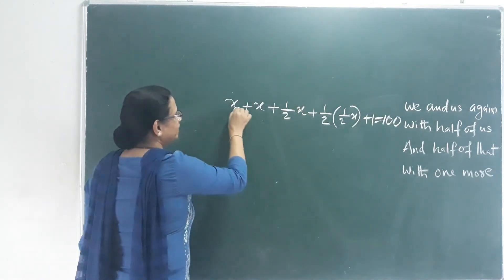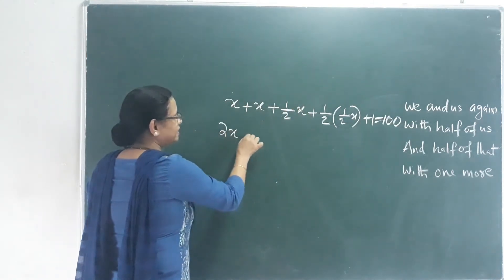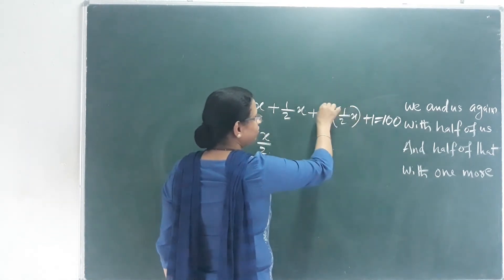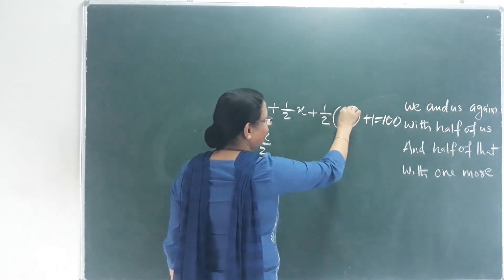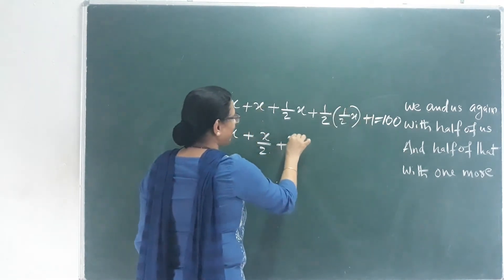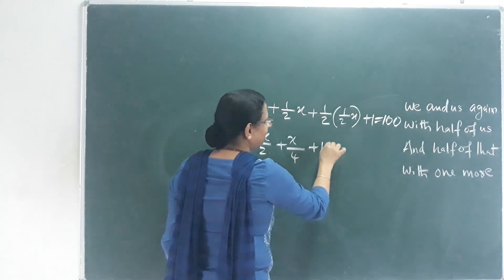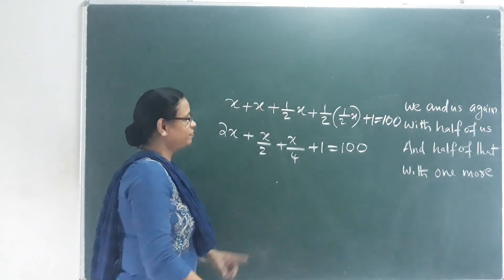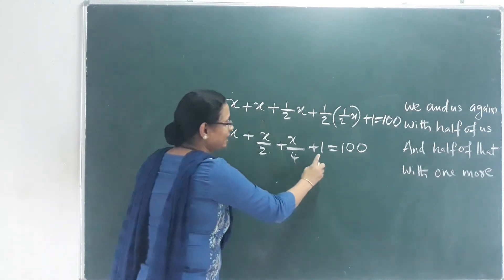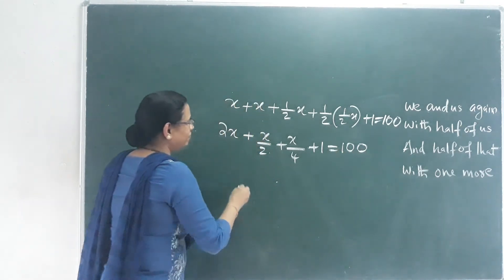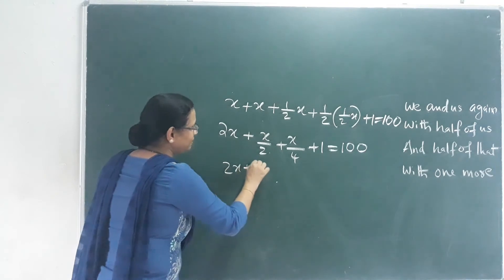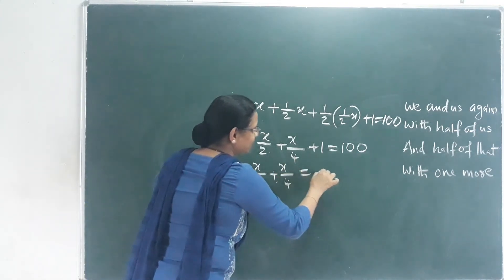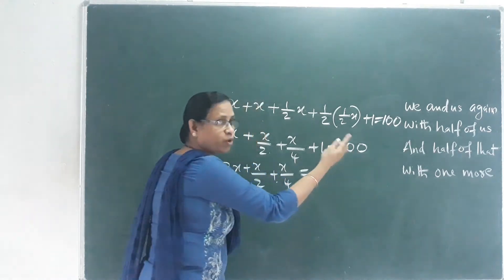So we have: x plus x plus x by 2 plus x by 4 plus 1 equals 100. That means 2x plus x by 2 plus x by 4 plus 1 equals 100, which gives 2x plus x by 2 plus x by 4 equals 99.